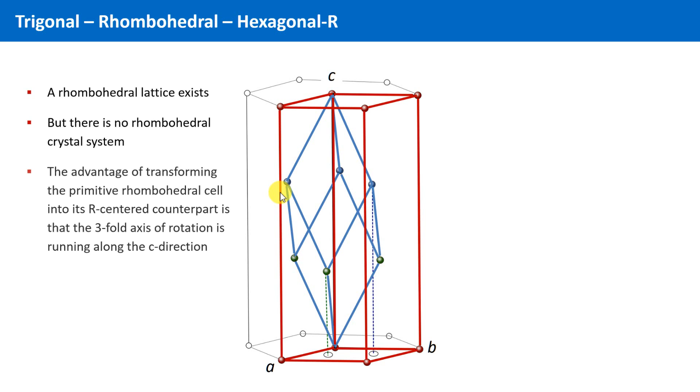And the advantage of transforming the rhombohedral cell into its hexagonal R-centered counterpart is, that the three-fold axis of rotation is then running along one of the lattice vectors, namely the c-direction. And this is consistent with crystallographic conventions.